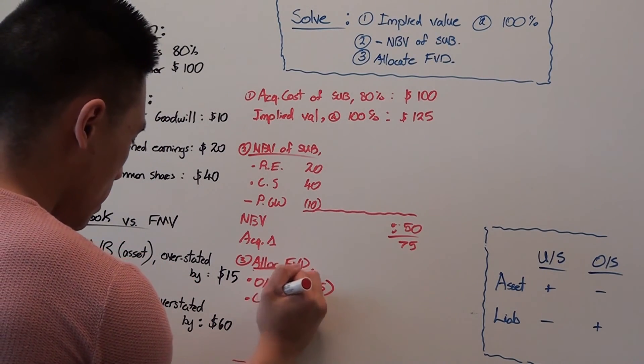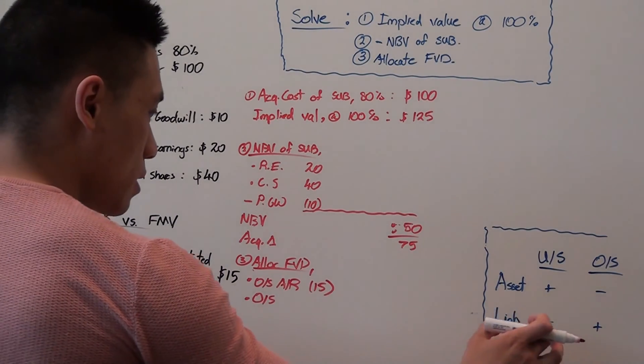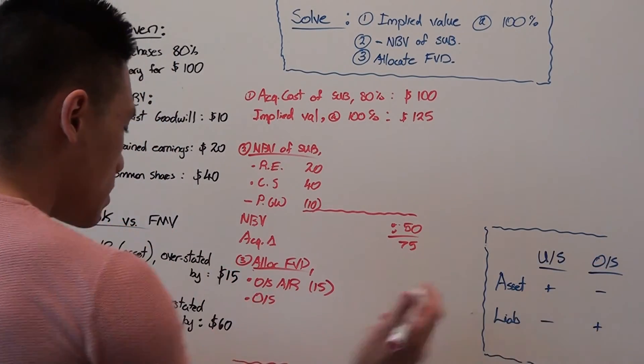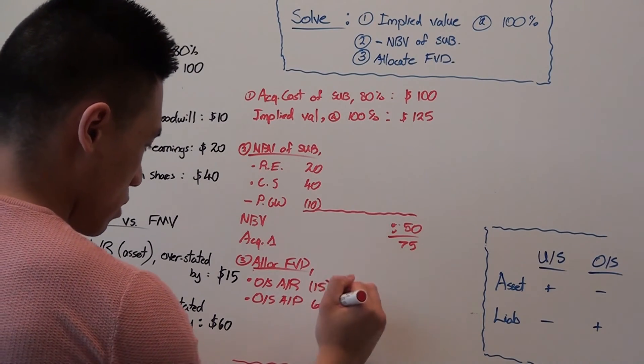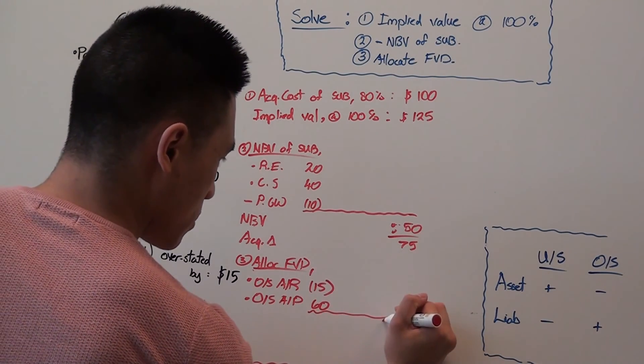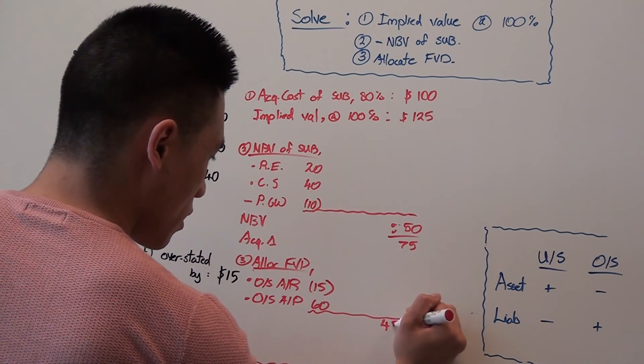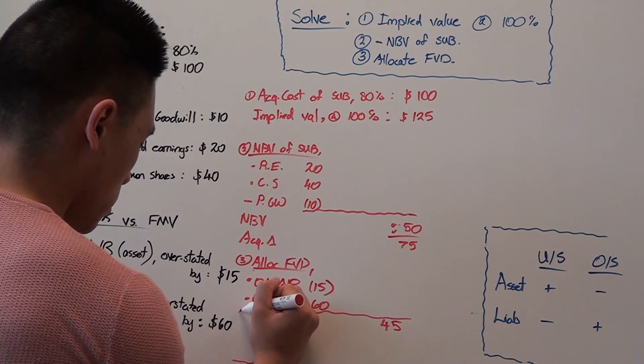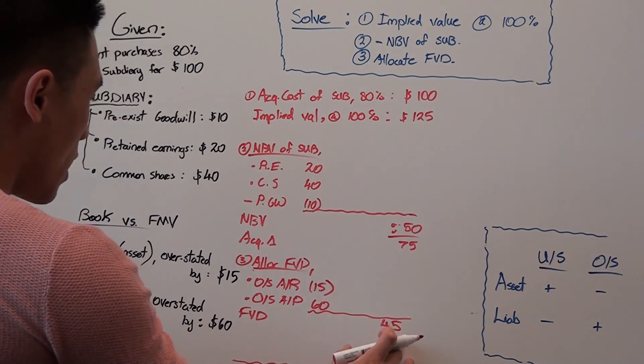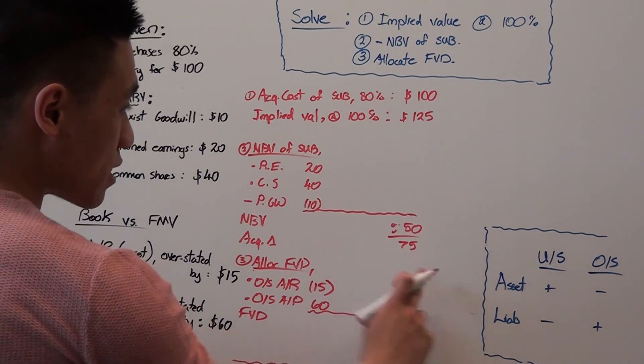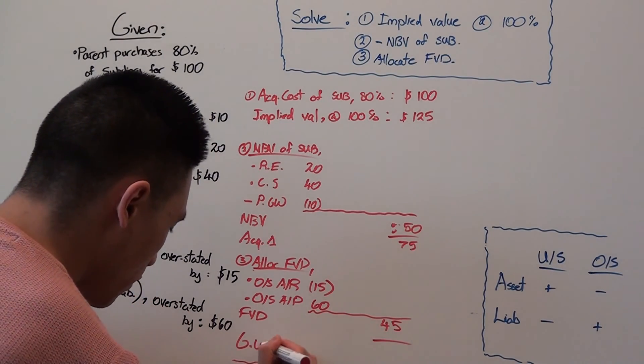And then we had an overstated accounts payable, which is a liability. Overstated liability is a plus sign. So we'll add 60. So 60 and negative 15 gives us 45, fair value difference of 45. And then if we take acquisition differential of 75 and we minus the fair value difference of 45, it will give us the goodwill of 30.